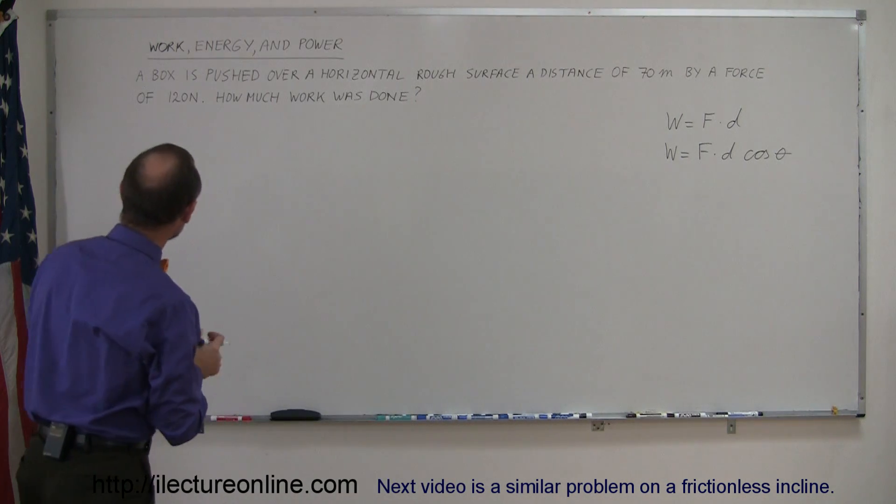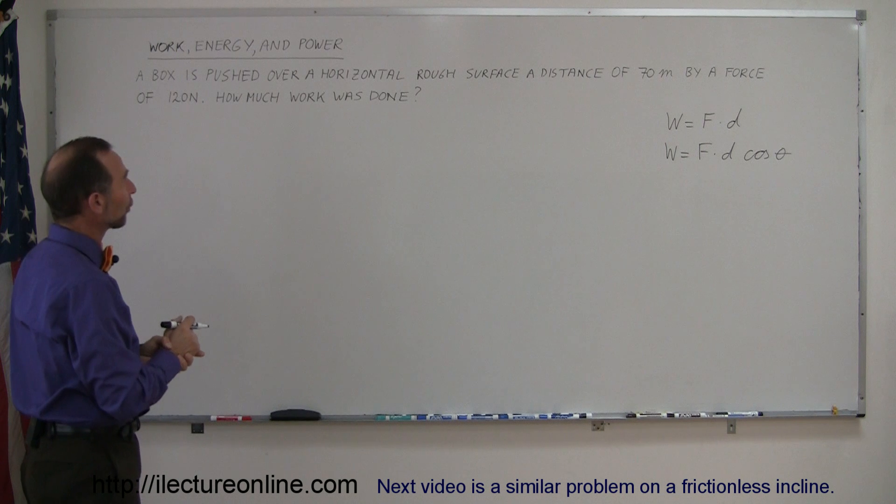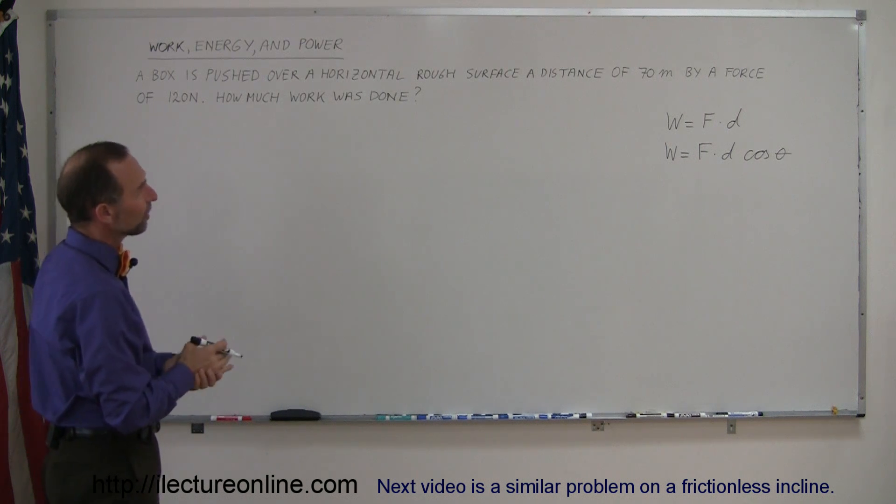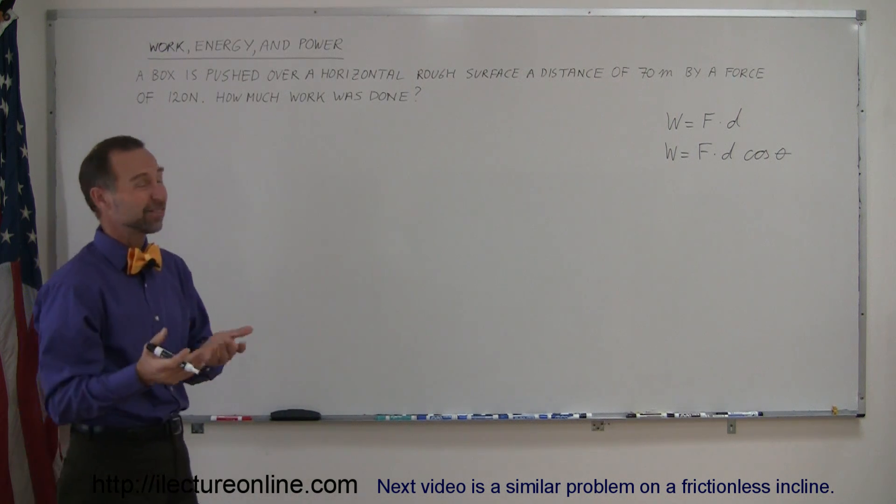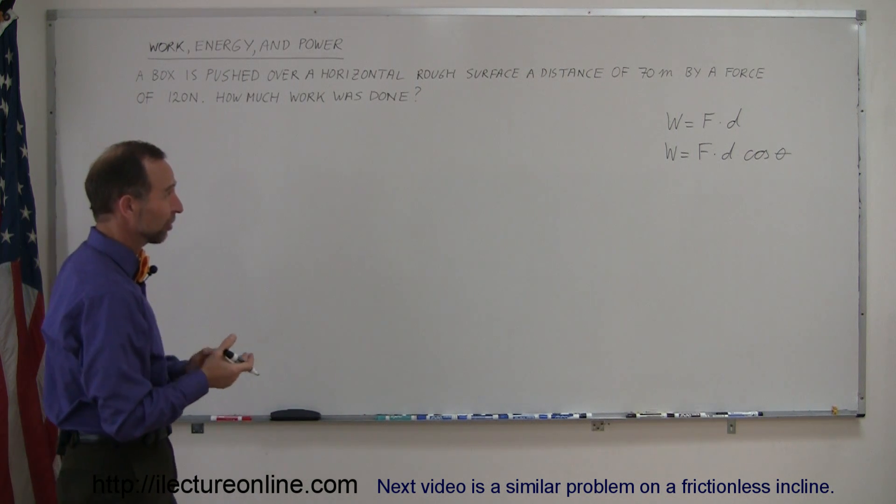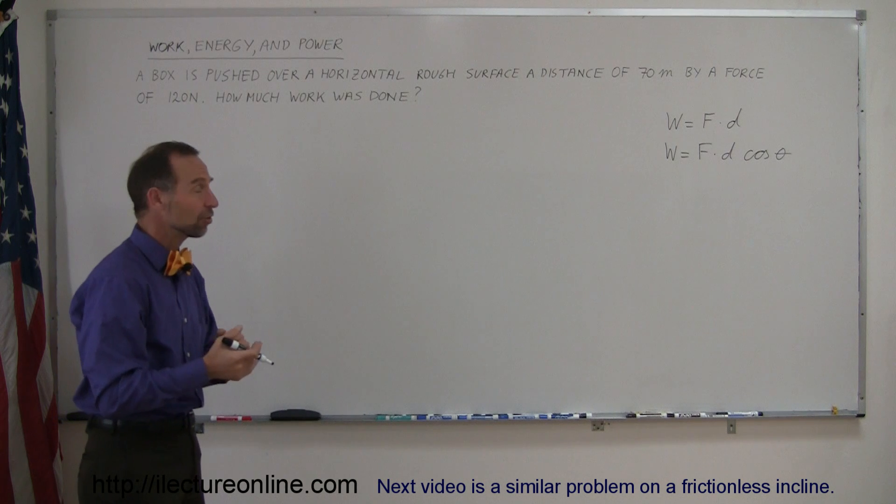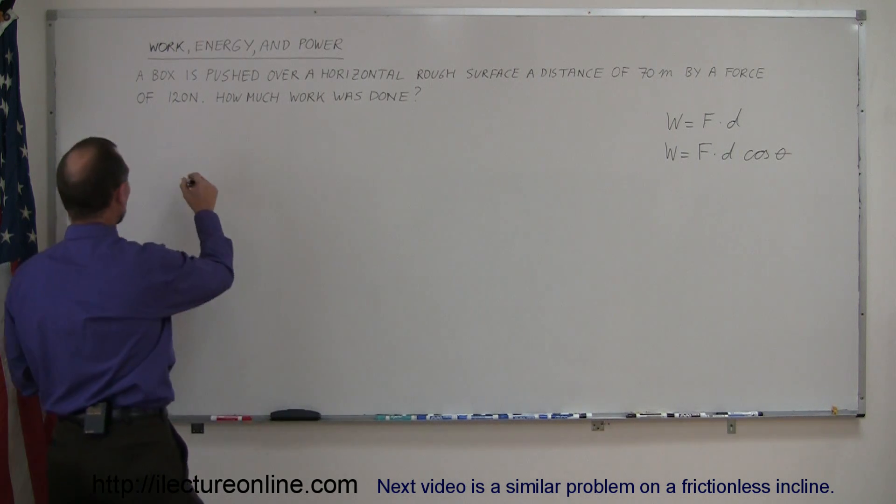So looking at the problem, it says here that a box is pushed over a horizontal rough surface a distance of 70 meters by a force of 120 newtons. How much work was done, and I guess the assumption here is that the force is pushing the same direction as the displacement, so let's make a little drawing.